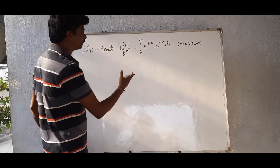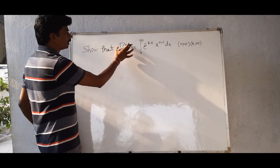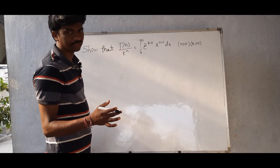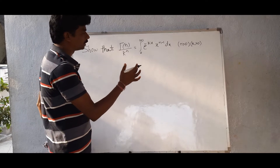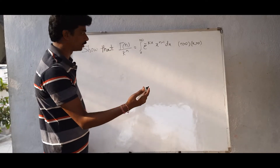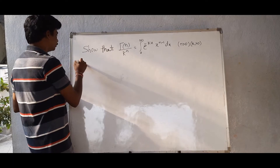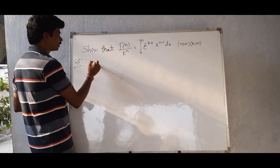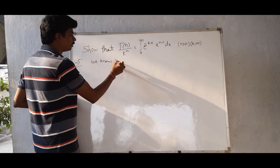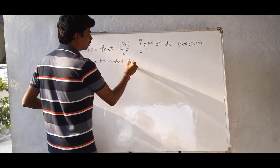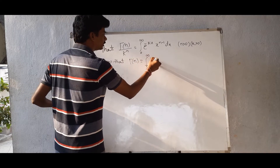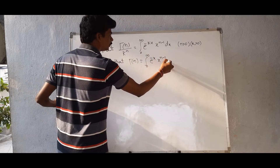Both n and k are positive. We know that gamma of n equals integral from 0 to infinity of e power minus x, x to the power of n minus 1, dx. Using this gamma function formula — this is equation 1.